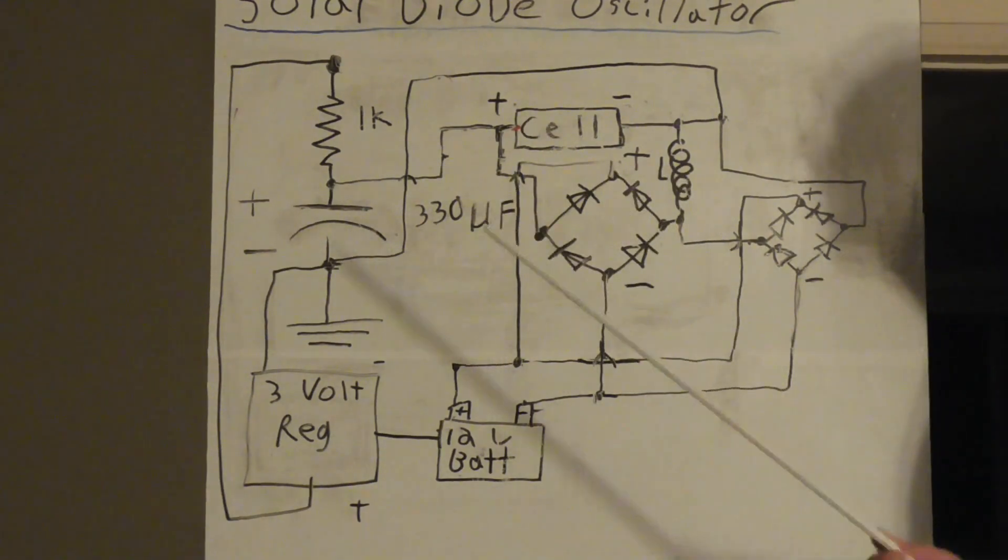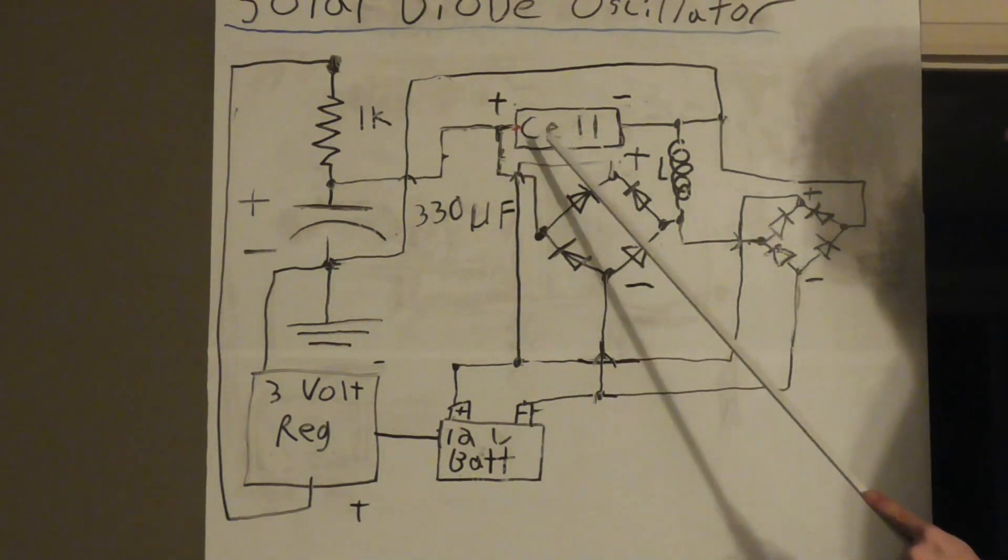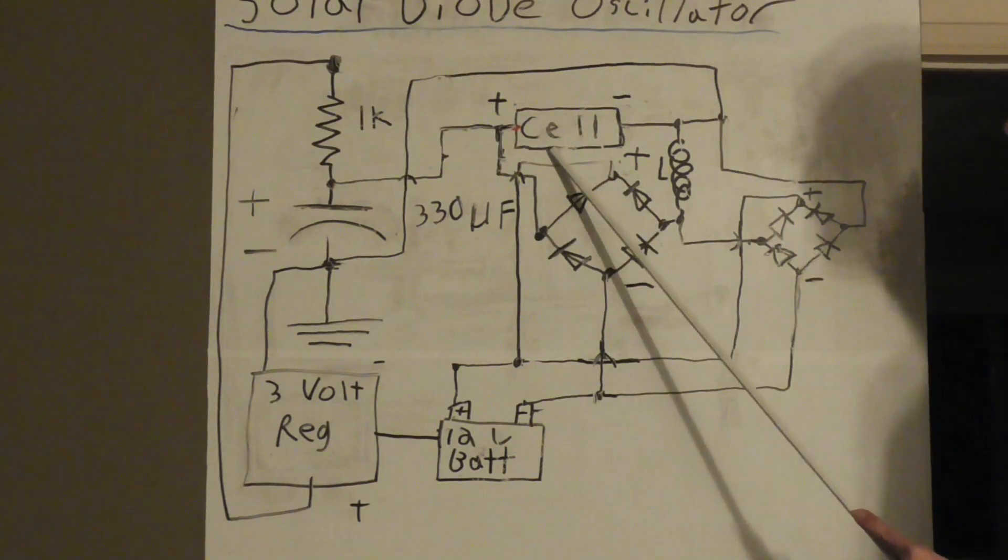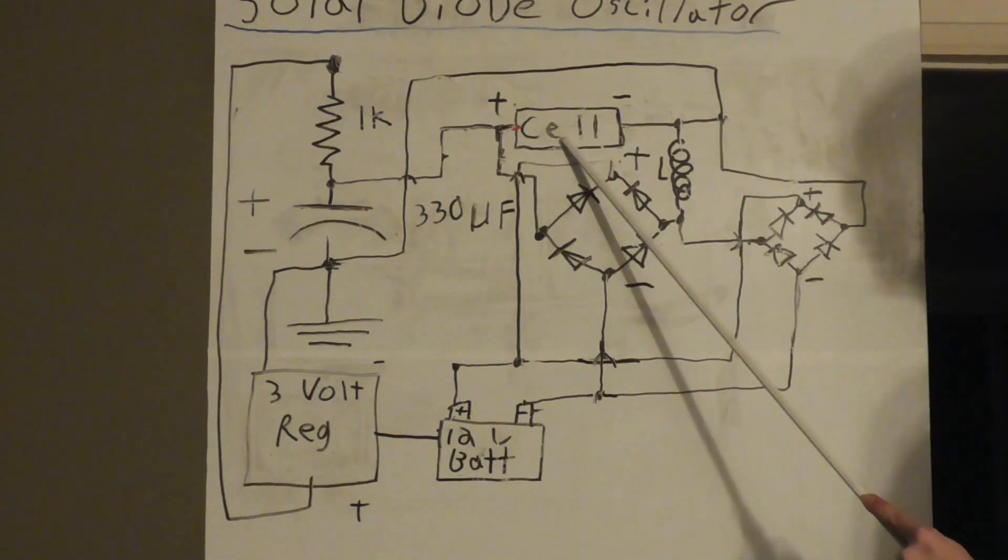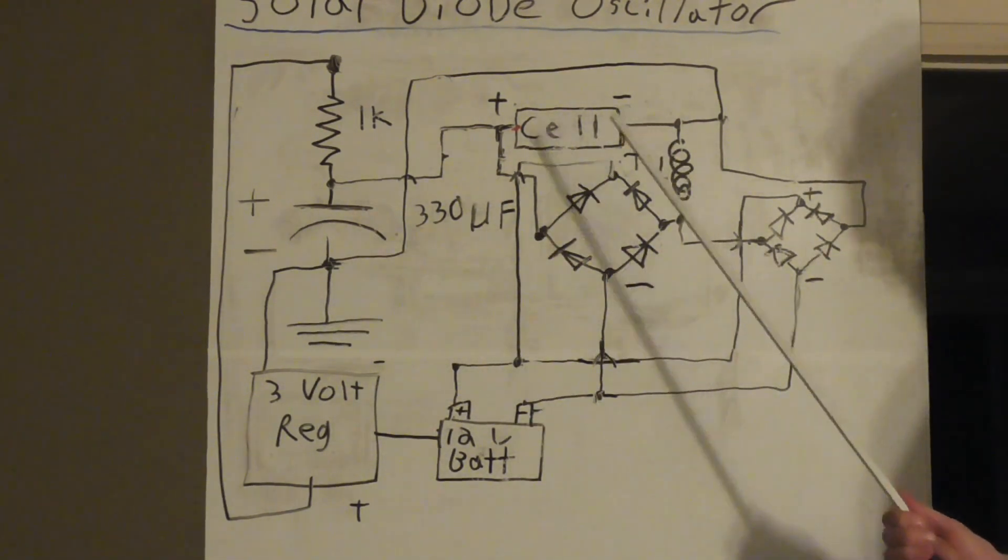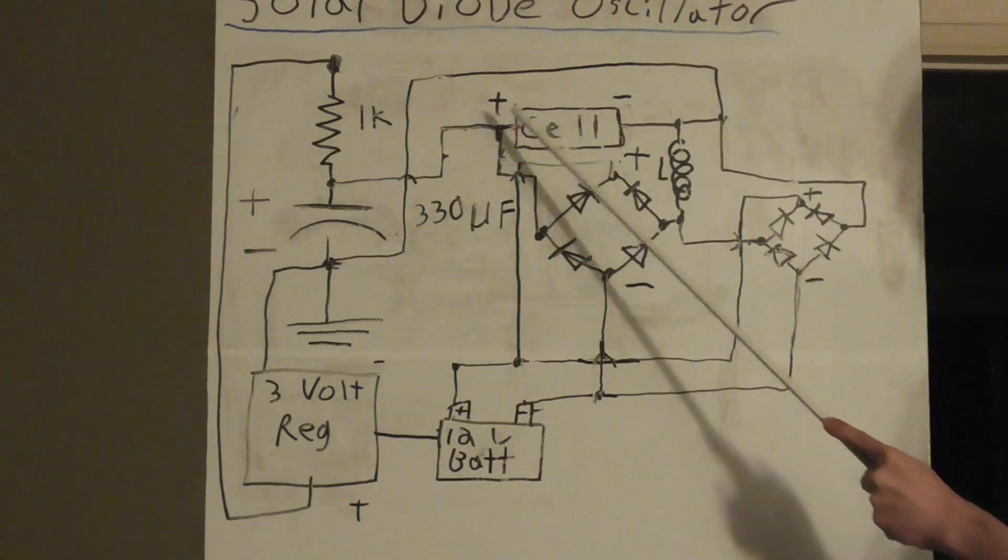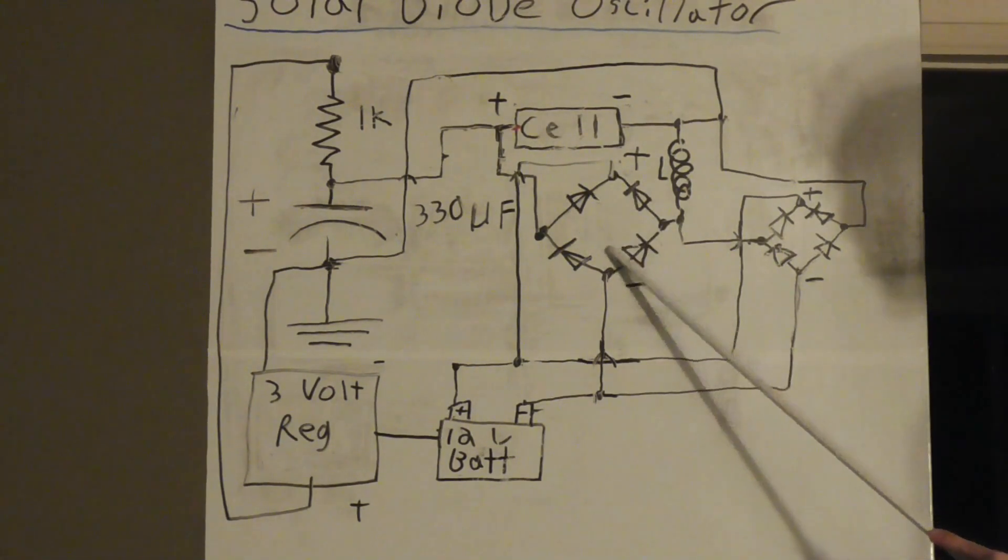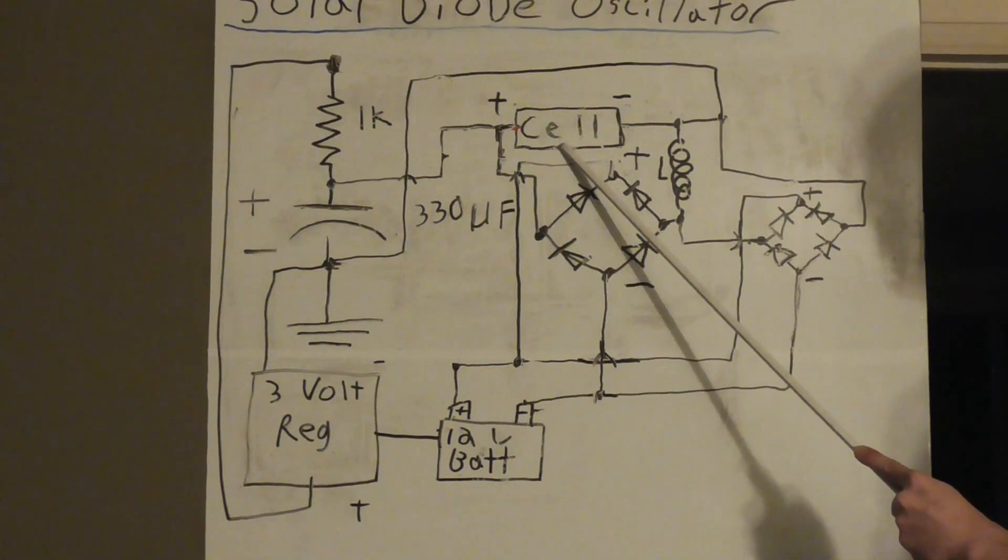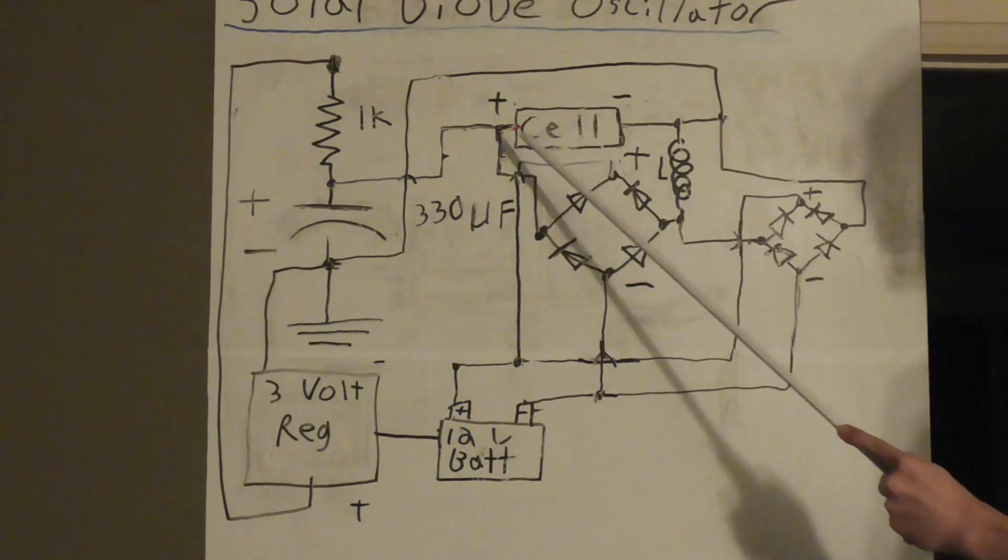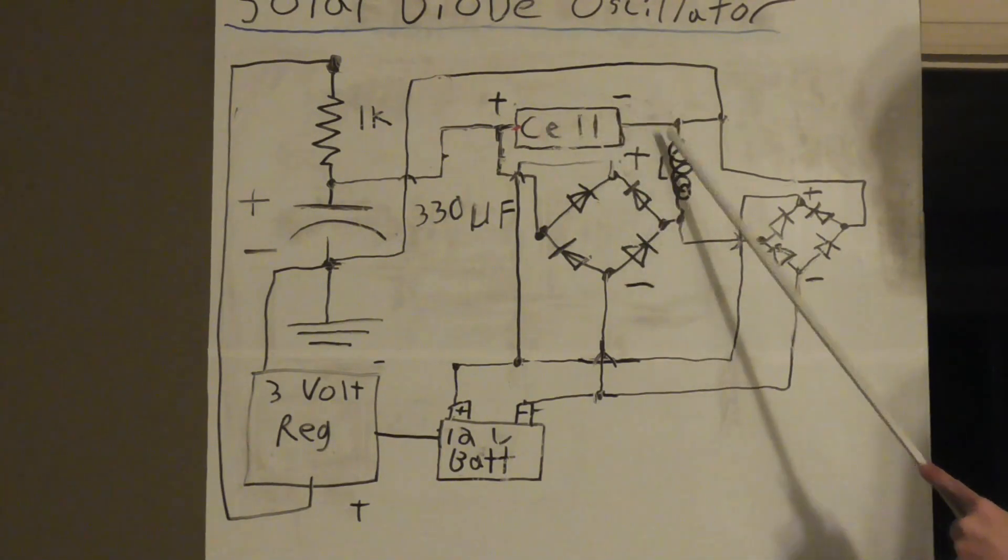The key word here is relaxation oscillator. I'm going to take advantage of the solar cell itself to run it as a diode oscillator relaxation oscillator. In short, how this works is we have the solar cell which, through the rectifier circuit in the daytime at full light, will give us whatever the solar can provide with very little loss back into the 12 volt battery as regular DC.